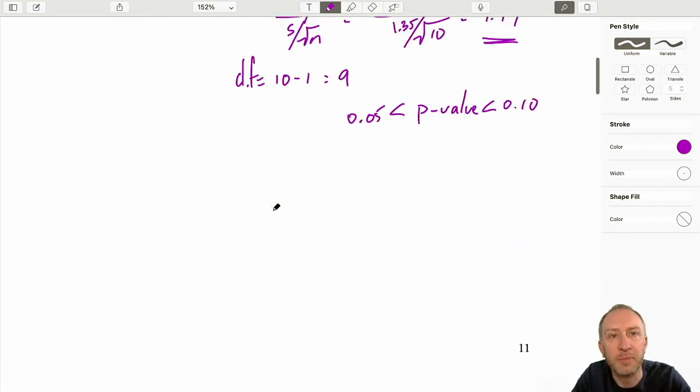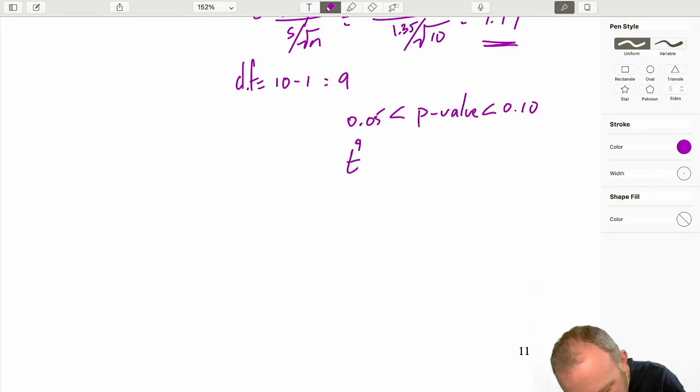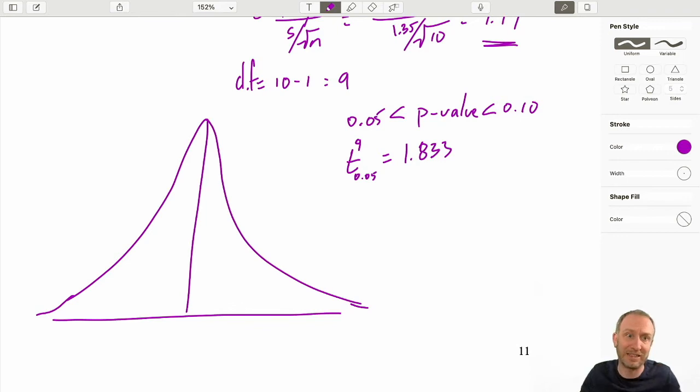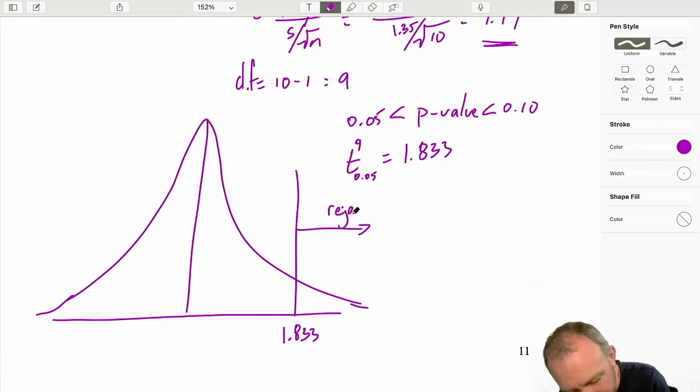So I can come back up to my problem. My critical t with 9 degrees of freedom at 0.05 is 1.833. So this means I have a t-distribution that looks something like this. It looks almost exactly like a z-distribution. Generally, when you have lower degrees of freedom, your t-distribution gets a little bit shorter and a little bit chubbier in the tails. When your sample size increases, it starts to get a little skinnier, a little taller. So here I have my critical value 1.833, just like previous tests that we've done. That defines my rejection space. Below that is my do not reject space.